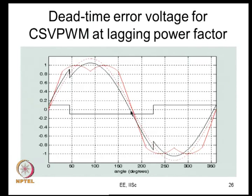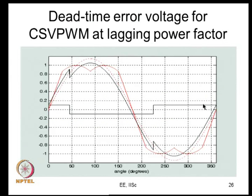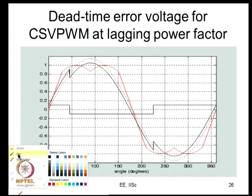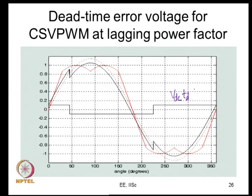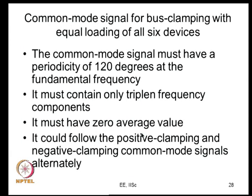For conventional space vector PWM, the dead time error voltage is this square wave. Now moving to the main topic of this lecture: bus clamping PWM. In all continuous PWM cases the error voltage is always a square wave with magnitude Vdc × Td / (2Ts). But for bus clamping PWM things are different, because one of the phases does not switch at all - which phase doesn't switch depends on the common mode signal added.